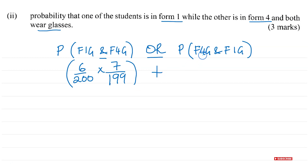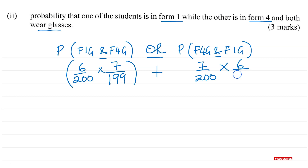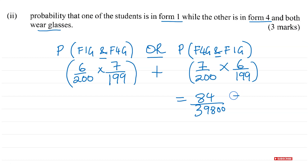There are 6 Form 1 students wearing glasses and 7 Form 4 students wearing glasses. So the probability of Form 1 with glasses then Form 4 with glasses is 6/200 multiplied by 7/199. For the reverse, it is 7/200 multiplied by 6/199. Adding both routes gives 84/39800 plus 84/39800, simplifying to 21/9950.